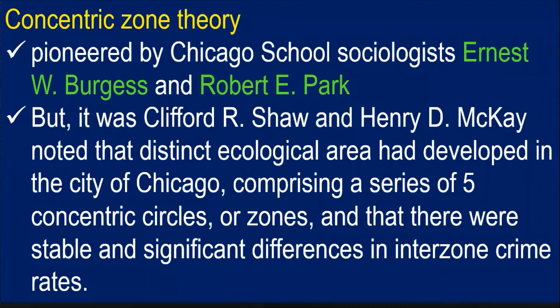Moving on — what is the concentric zone theory? It is also related to the Chicago school. Chicago has historically been a dangerous area, much like Tondo in Manila, because it was one of the first places where many people migrated temporarily or permanently. It was pioneered by Ernest Burgess and Robert Park, and enhanced by Shaw and McKay. They noted that distinct ecological areas had developed in the city of Chicago, comprising a series of five concentric circles or zones, with stable and significant differences in inter-zone crime rates.